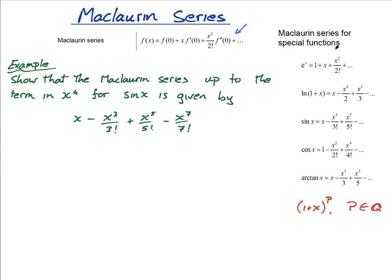Now in the formula booklet we are given these five Maclaurin series: e to the x, ln of 1 plus x, sin x, cos x, and arctan of x. This one is not in the formula booklet but it specifically says it in the guide, so I'm going to do a lesson on this one in particular.